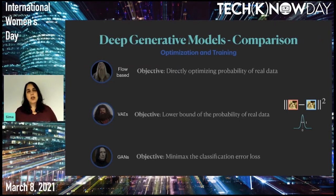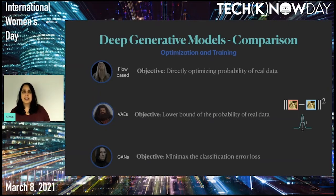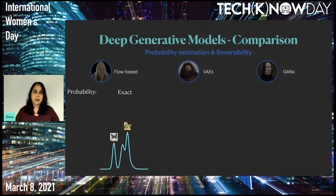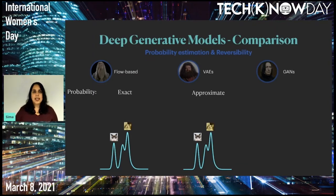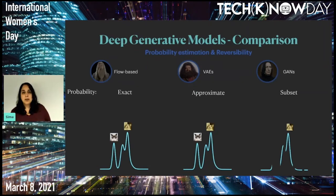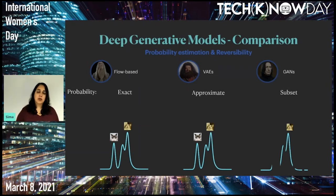GANs optimize minimax on the classification loss. The optimal solution is reached at Nash equilibrium, which is very unstable. For example, if the discriminator is trained too quickly, no matter what the generator does, it keeps getting the same feedback — that it's not good enough — and without productive feedback it can never learn what a good image looks like and training never converges. Regarding probability estimation: flows estimate the probability of real data exactly, VAEs approximate it via the lower bound, and GANs don't explicitly optimize probability but implicitly learn a subset of the distribution — in extreme cases, possibly only a single image, which is referred to as mode collapse.